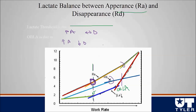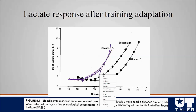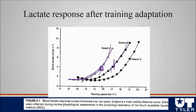Importantly, lactate threshold is trainable. Looking at blood lactate curves across several years for a middle distance runner undergoing classic endurance training: in their first season, OBLA occurred at roughly under 16 miles per hour. By their junior year, they could run roughly 17.5 miles per hour before fatiguing. By season three, it was even better. You can see gradual rightward shifts in the lactate threshold curve, meaning a higher intensity is required to reach lactate threshold — a clear marker of improved endurance fitness.